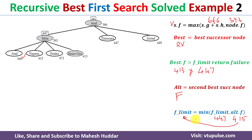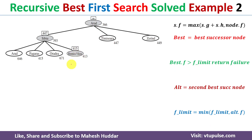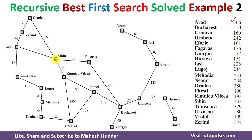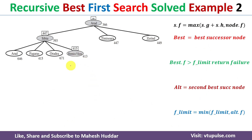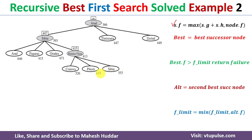We write f_limit = 415 on Rimnicu Vilcea and expand it. Rimnicu Vilcea's successors are Sibiu, Craiova, and Pitesti. We add all three to the search tree and calculate their f values using the equation with node.f (parent f) = 413. After calculating, the best among the three is Pitesti. best_f = 417, and the current f_limit is 415.